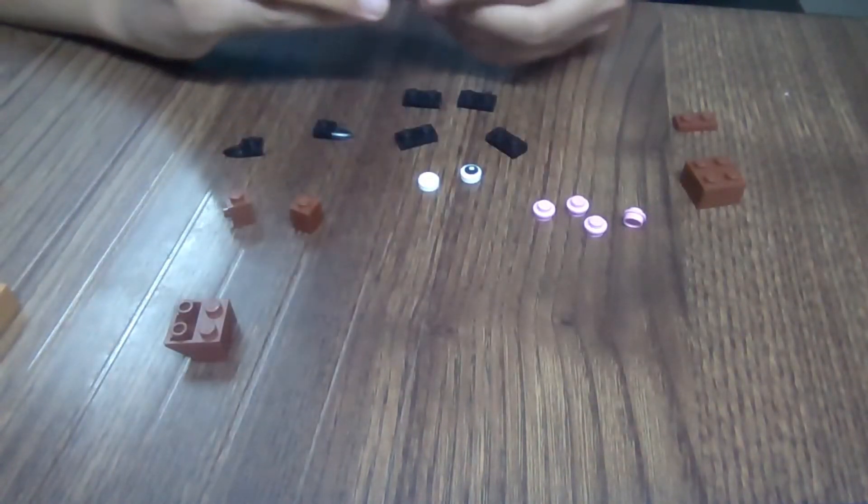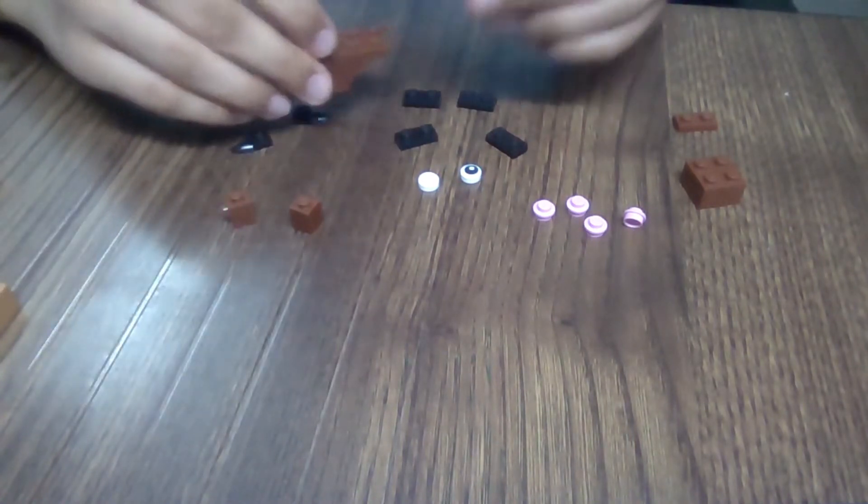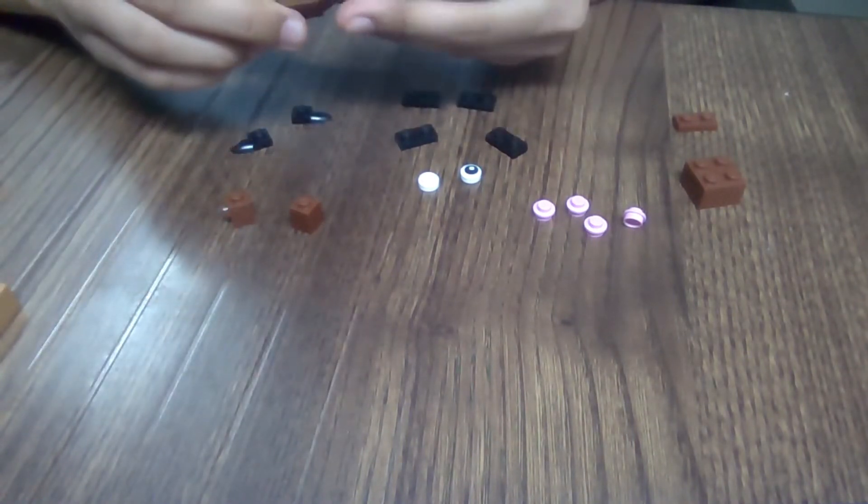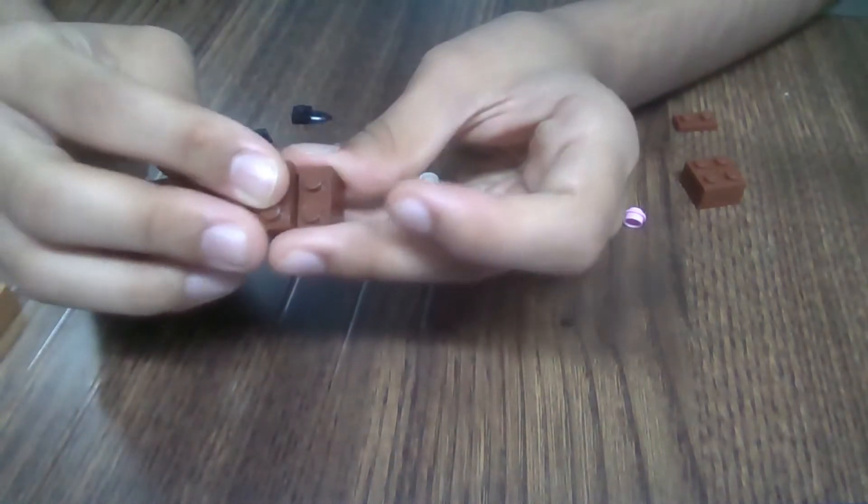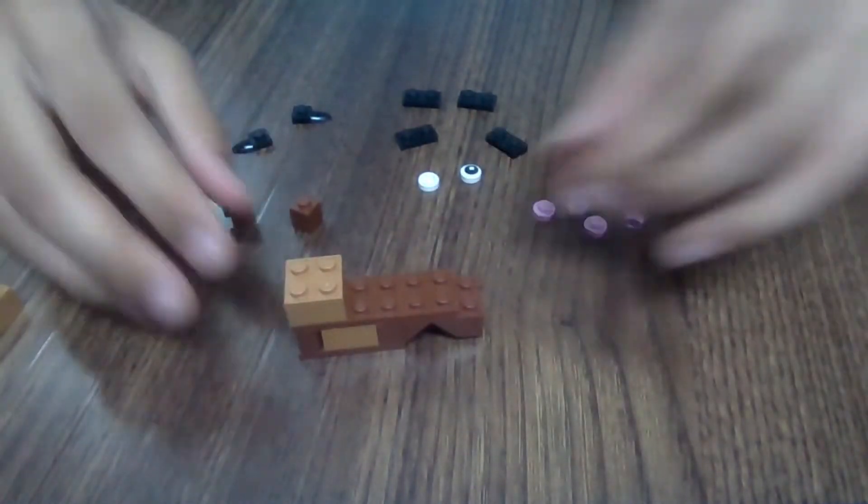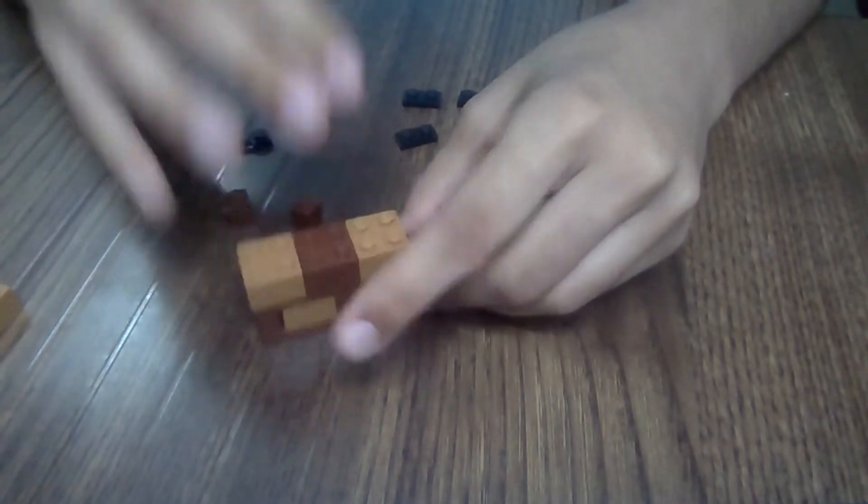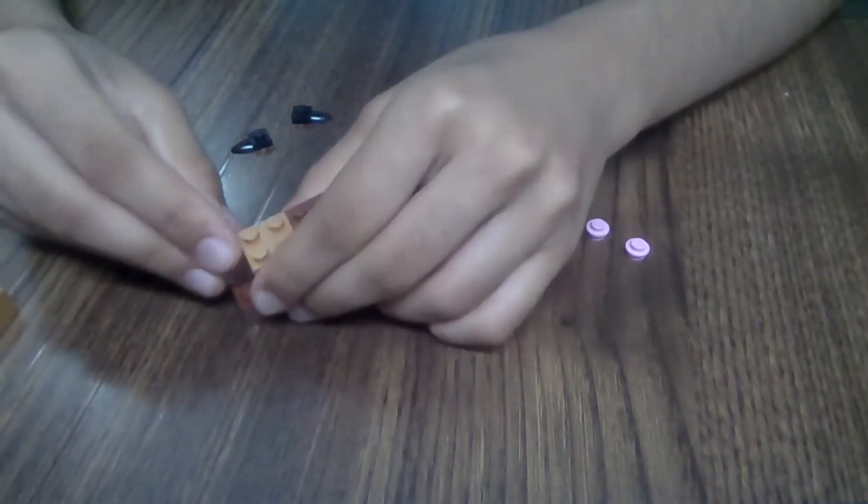Now on top of this you're going to place this piece, and there you're going to put this. Done. On top of this we're going to put this block, and then this one, and this one. So our goat is starting to come together.